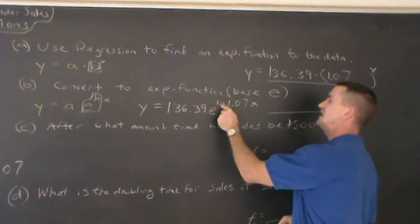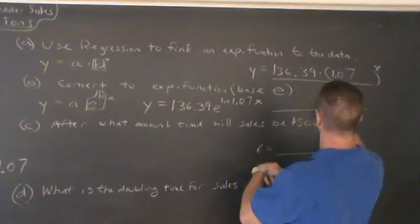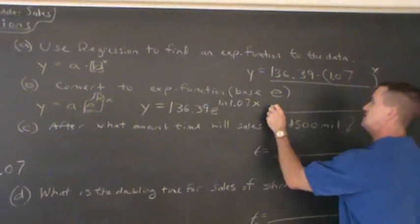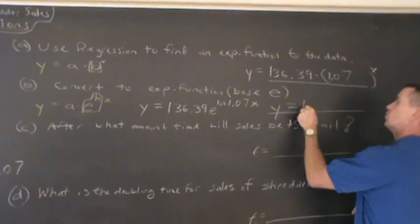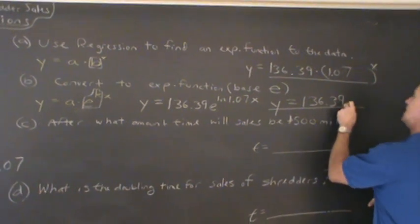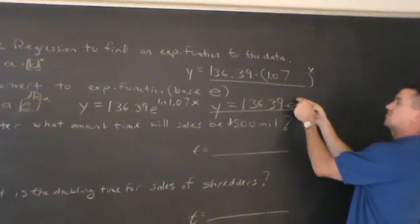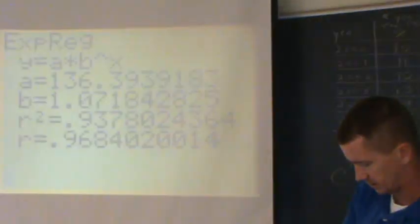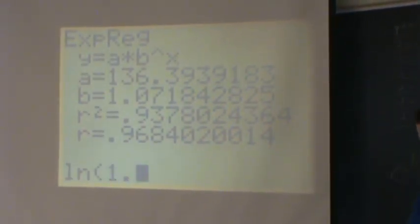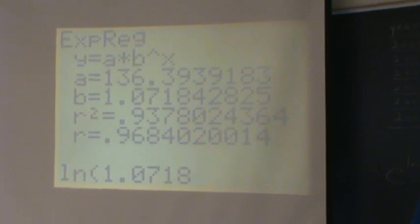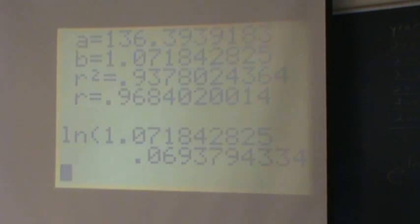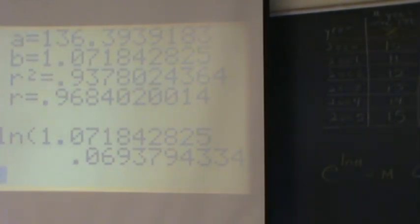But I would like to know what is e to the natural log of this 1.07. Well, it's this, but I wanna know what is the natural log of 1.07 so I can write it as a rate. So I can write this as a nice equation as y equals 136.39 e to some nice growth rate right here with the variable x. So I'm gonna find out what the natural log of this 1.07 is. I'm gonna use the calculator right now. What's ln? 1.071842825. Let's see what we have. It is .0693.